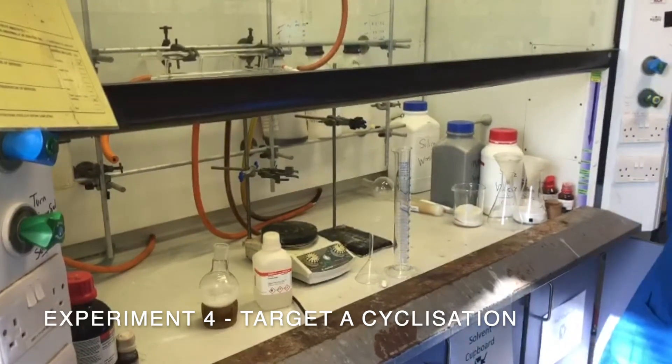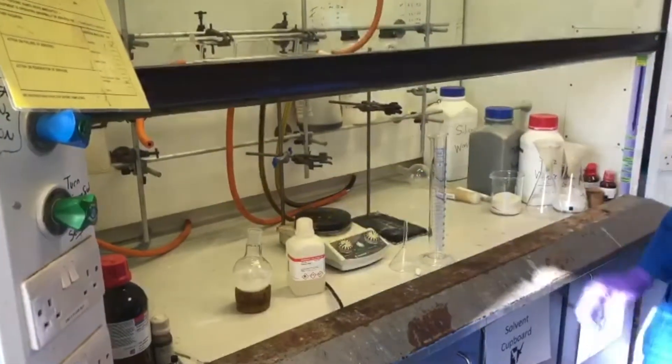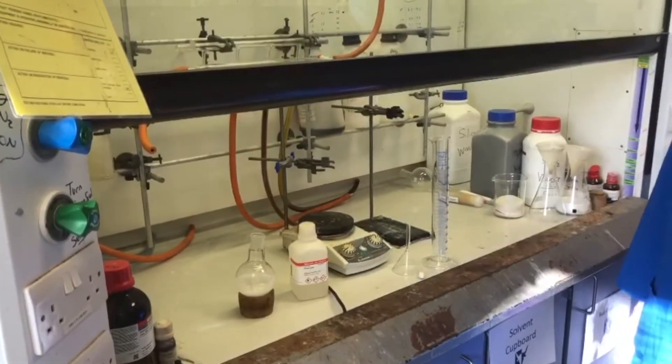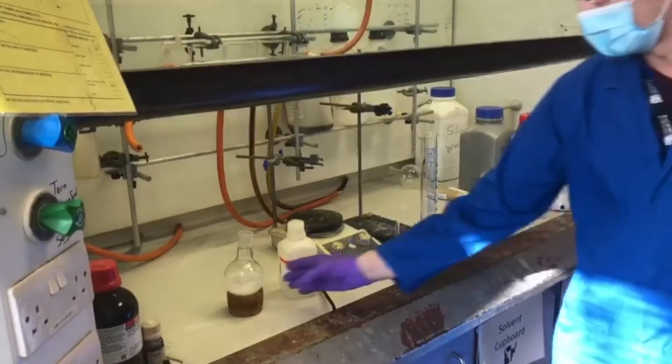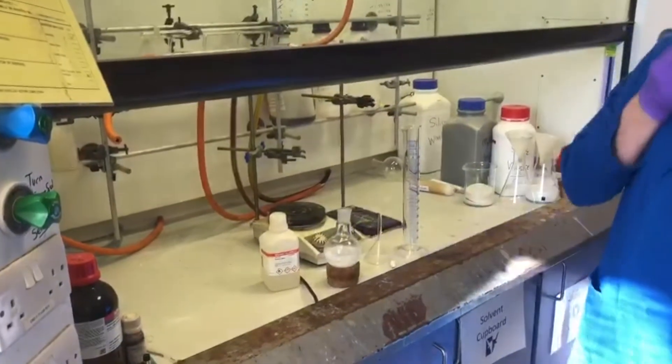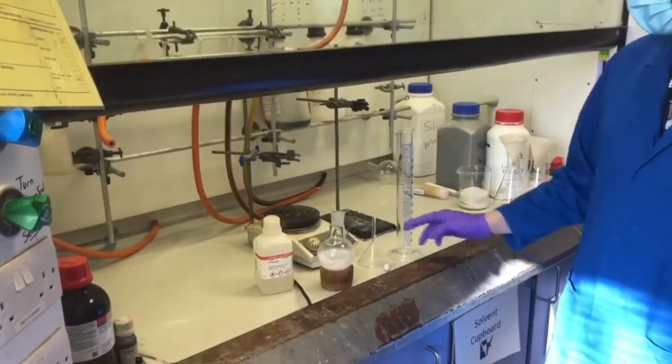For this you're going to need your dipeptide, which we've already transferred to a round-bottom flask, formic acid, and the glassware to weigh out your formic acid into your reaction. We worked out that we have approximately 3.3 millimole of our dipeptide, so we're going to add 143 milliliters of the formic acid.